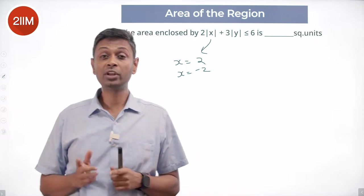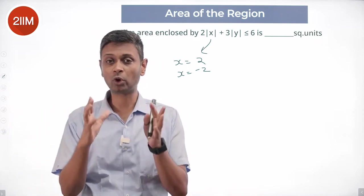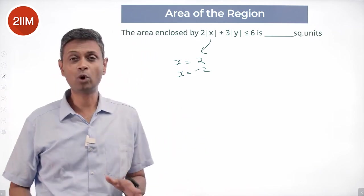If y equals 1.8 works, y equals minus 1.8 will also work. So we say I'm going to forget about negatives and deal only with positives.